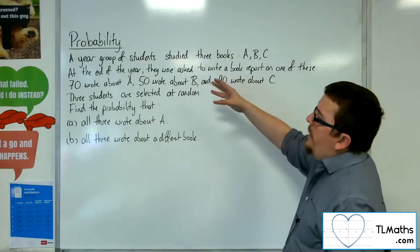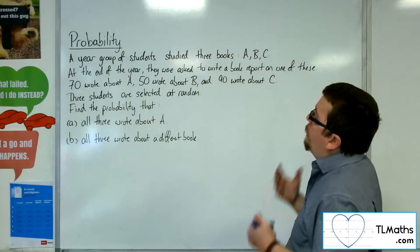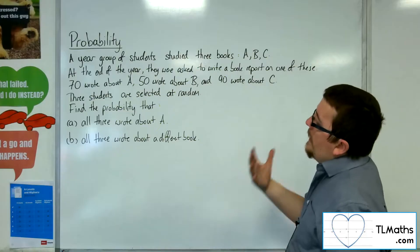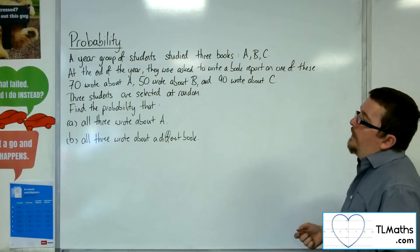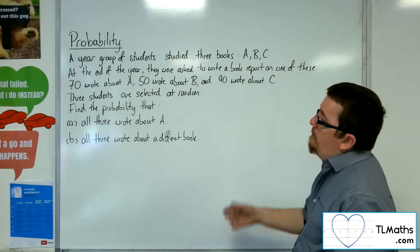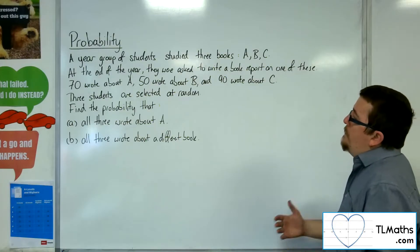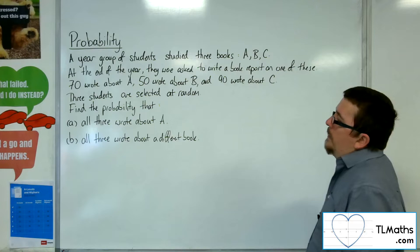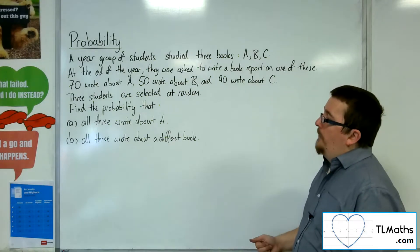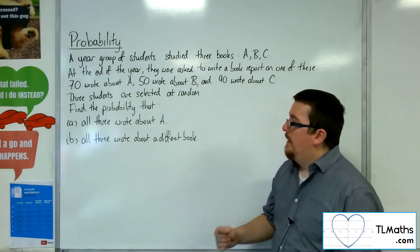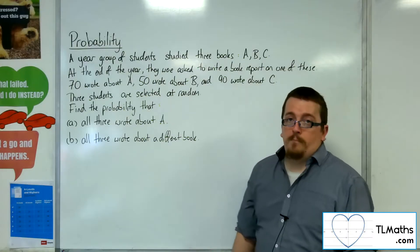A year group of students studied three books: A, B, and C. At the end of the year they were asked to write a book report on one of these. 70 wrote about A, 50 wrote about B, and 90 wrote about C. Three students are selected at random. Find the probability that all three wrote about A and all three wrote about a different book.